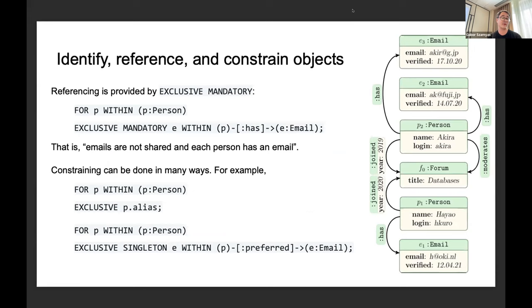Referencing is provided by the combination of exclusive and mandatory. For example, emails are not shared and each person has an email. Every person p, it must be the case that there's an edge labeled has coming out of p to a node labeled email, and that node e is exclusive to p. Constraining can be done in many ways. For example, aliases are exclusive to people but they don't necessarily have to have them and can have multiple aliases. Or people don't have to have a preferred email, but if they do, it's exclusive to them and they can have only one.